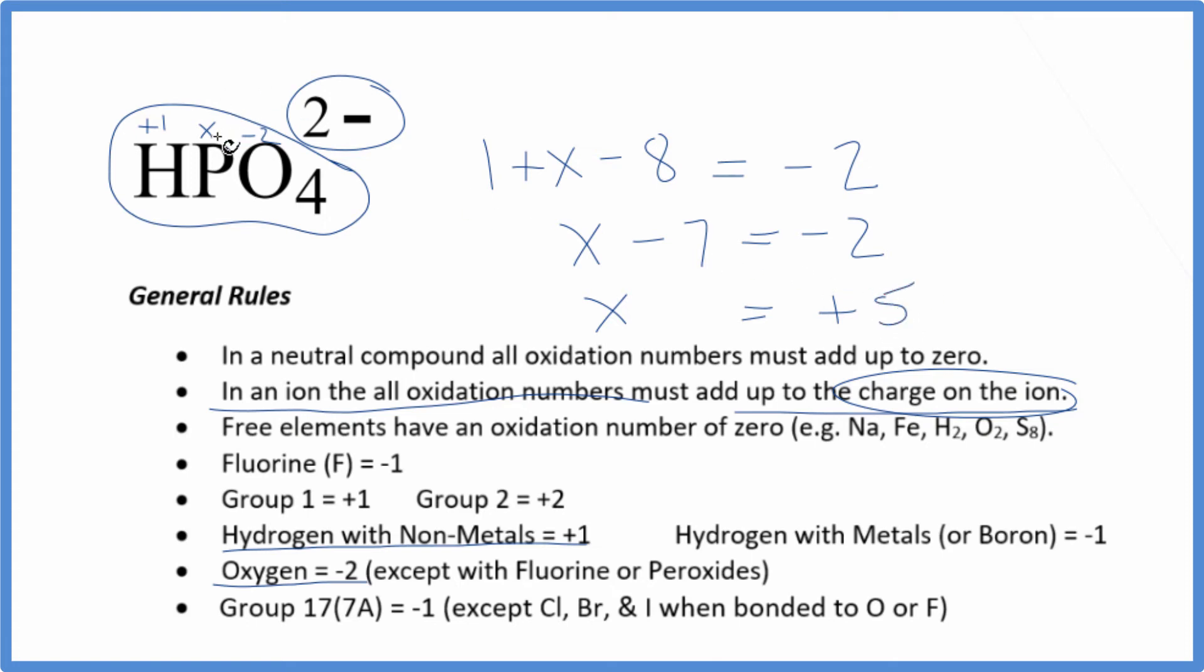So the oxidation number on the phosphorus here in HPO4 2- is going to be a positive 5. If we add all the oxidation numbers up for these elements, they'll add up to this 2-.